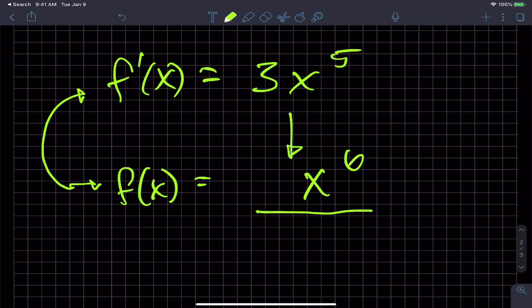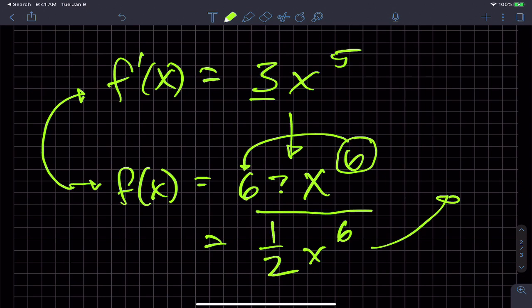But remember, I would have taken this sixth and dropped it down as a coefficient. So six times what would give me this three? Well, this would have had to start out as one half x to the sixth, because if I use the derivative rules, I would have taken six and multiplied it, which would give me this 3x to the fifth.